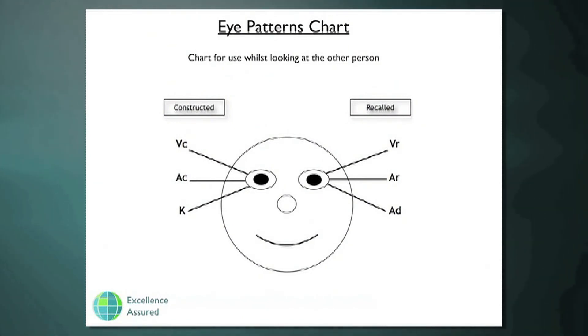In order to remember this easily, it's always in alphabetical order. So, construct, C for construct, is always on the left, and R for recall is on the right, unless the person's reversed organized, and then it's on the left.